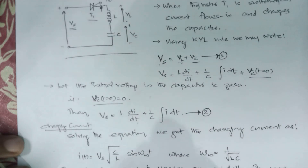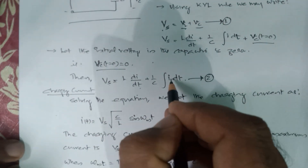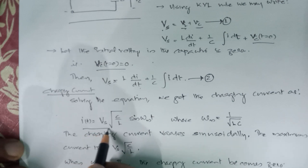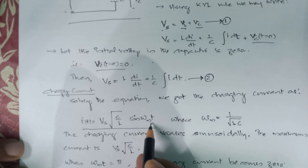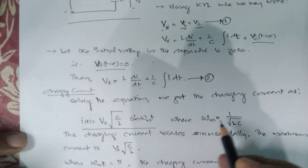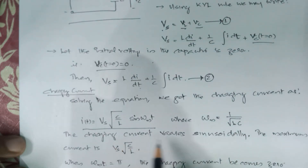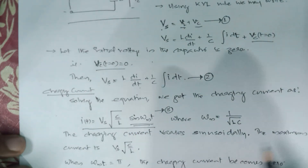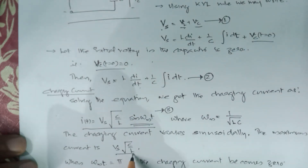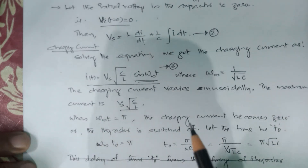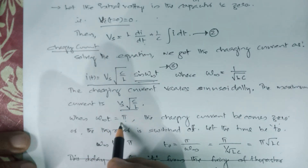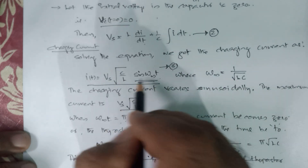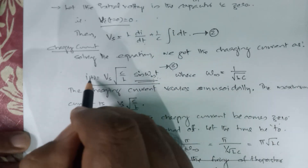On solving this equation, we can find the current as well as the capacitor voltage. The current is the charging current, given by I(T) equals Vs·√(C/L)·sin(ωm·t), where ωm equals 1/√(LC). The charging current varies sinusoidally, as evident from this equation. Let this be equation 3. The maximum value of the charging current is Vs·√(C/L). When ωm·t equals π, sine π is 0, which means the charging current becomes 0.